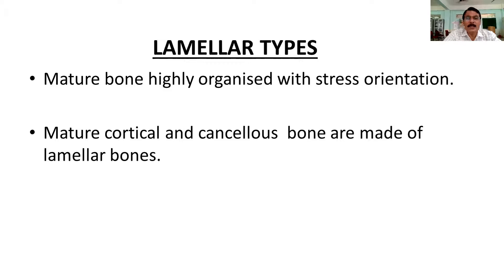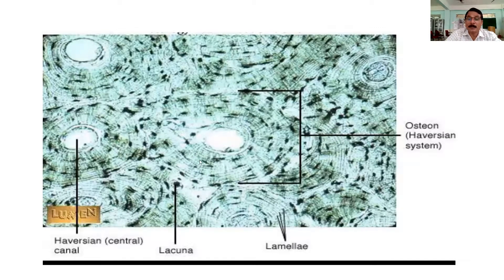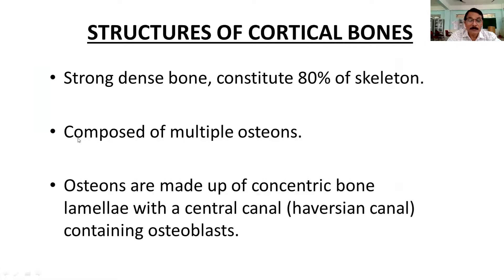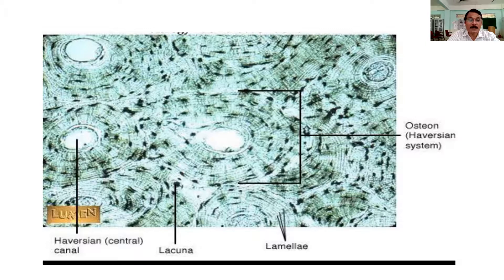Mature bones are highly organized and stress-oriented. In long bones, you will typically see patterns indicating the line of stress. The mature cortical and cancellous bones are made up of lamellar bone — they are organized in a very systematic way, forming osteons. This is a picture showing the lamellar pattern, where one structural unit is called an osteon or Haversian system. These are the concentric layers surrounding a central canal, and in between the laminae we have lacunae. In the inner part of the Haversian system, we have the Haversian canal.